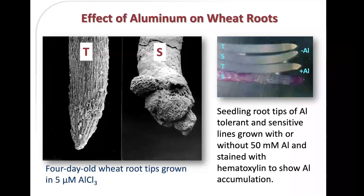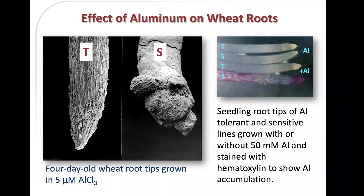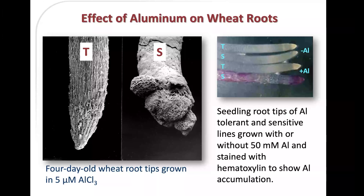Here's an example of aluminum toxicity. This is work done in Australia where they had two varieties — one tolerant and one sensitive to aluminum. They grew four-day-old wheat root tips in a solution of five micromolar aluminum chloride. The photo shows root tips stained with hematoxylin, which shows where aluminum accumulates. In the sensitive variety with aluminum present, you can clearly see accumulation of aluminum.